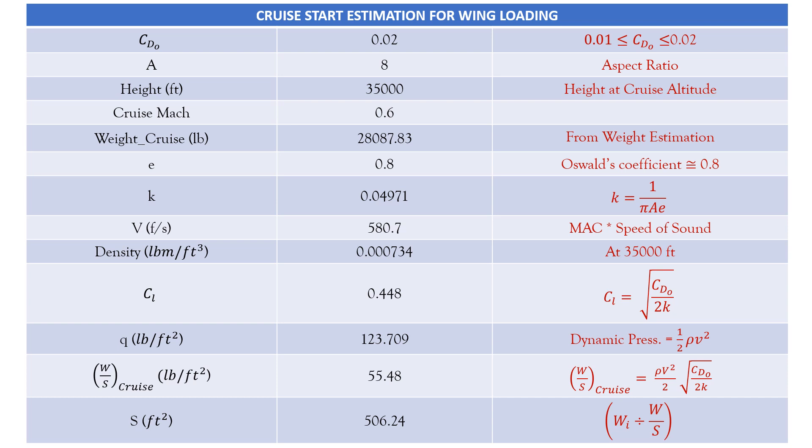We have K where K equals 1 by pi AE and we get a value of 0.04971. We have a velocity V of 580.7 feet per second, which is the velocity at 35,000 feet. And then we have the density at that altitude which equals 0.000734. Then we have CL, the coefficient of lift, and coefficient of lift equals CD0 by 2K square root, which gives a value of 0.448.